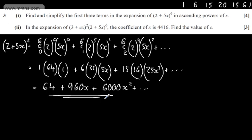In the second part of the question for three marks, it says in the expansion of (3 + Cx)² multiplied by (2 + 5x)^6, the coefficient of x is 4,416. We're asked to find the value of C.